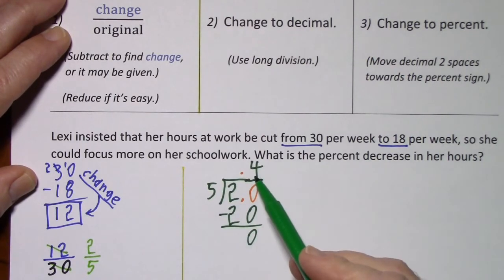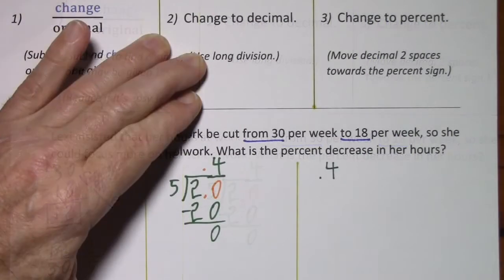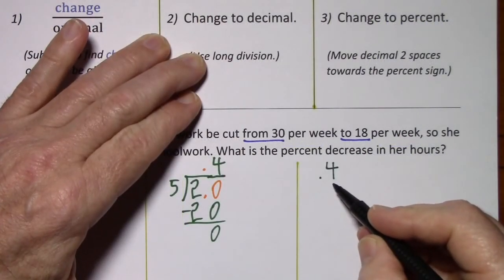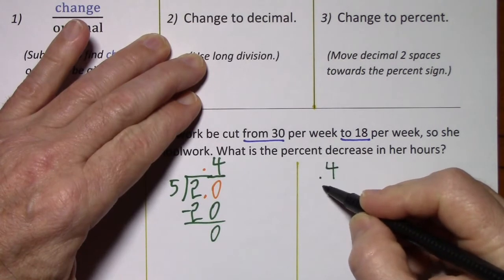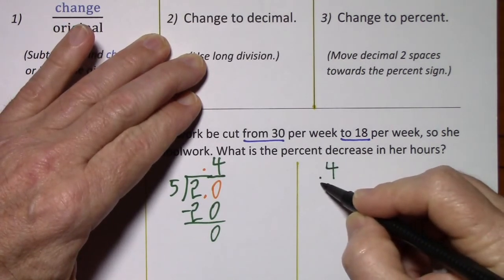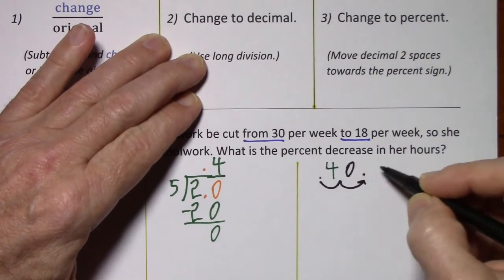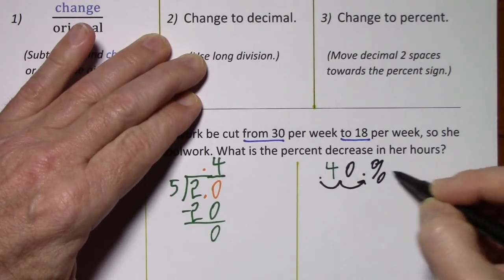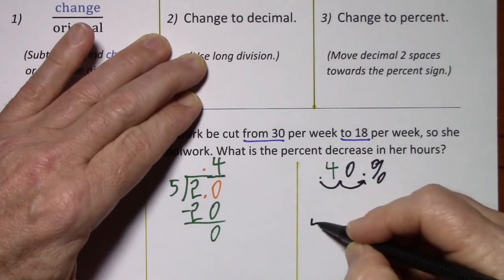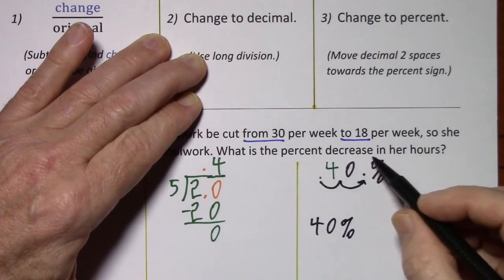Now we take this decimal and change it to a percent. To change 0.4 to a percent, we put in a percent sign — you move the decimal two places towards the percent sign. So we have a 40 percent decrease.